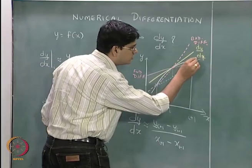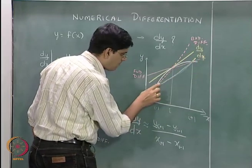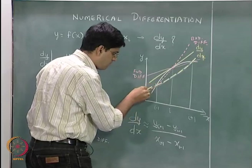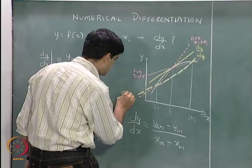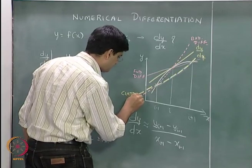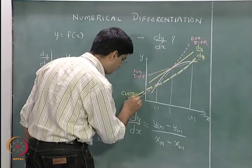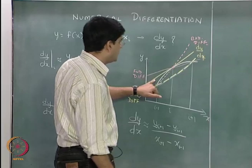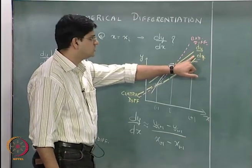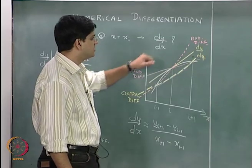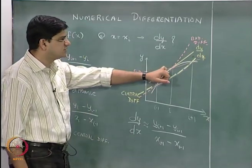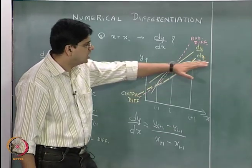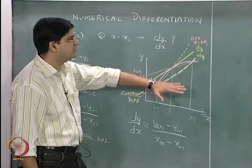I will just join it with another yellow dotted line over here, and this is the central difference. The yellow solid line is the true dy by dx — the true derivative of the function y equal to f of x with respect to x at point i. The red solid line is the forward difference approximation.